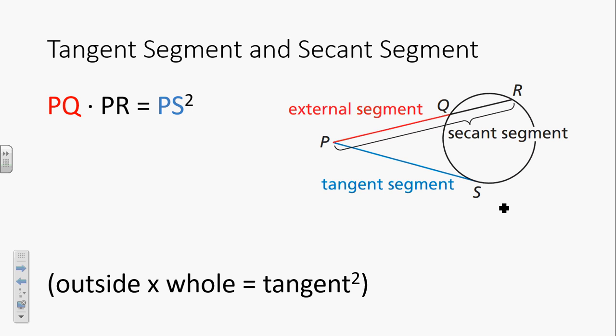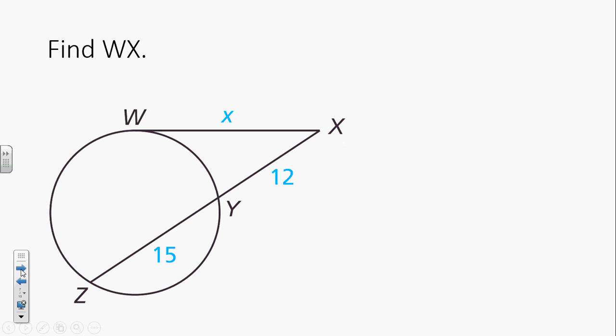On the tangent segment and secant segment theorem, we're going to find out that if you take the outside of the secant times the whole secant, that's equal to the tangent squared. Outside times whole equals tangent squared. Do you see that our secant has two parts to it? One that's outside of the circle, and one that's inside. So we're concerned about the outside, and the whole thing, and then the tangent times itself.